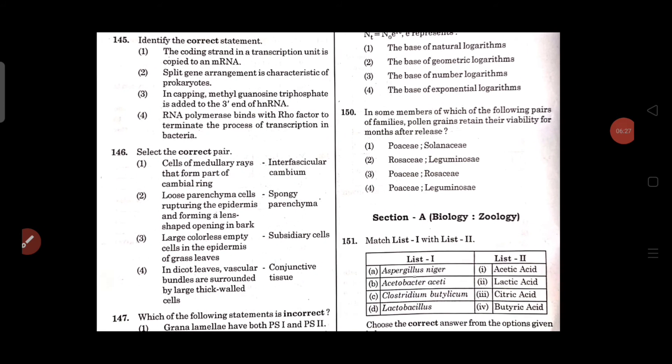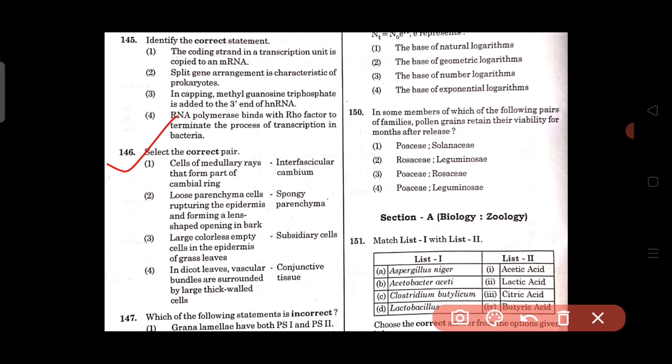Question number 146: Select the correct pair. Cells of medullar rays that form part of cambial ring is known as interfascicular cambium. This one is correct. Option 1 is correct for 146.